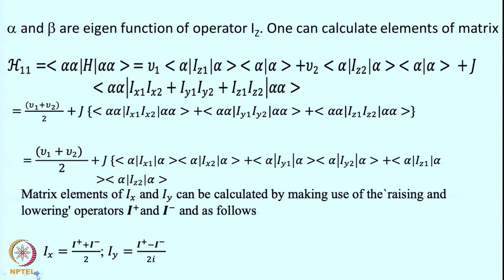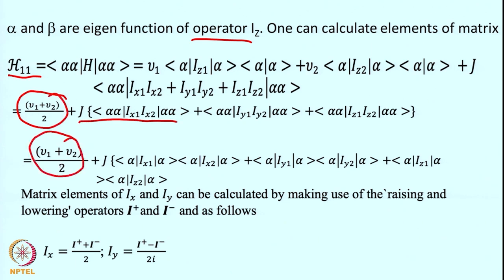We can define the eigenfunction for operator Iz with alpha and beta states, and calculate the matrix elements. From this we get terms H11, and solving the equation gives essentially the frequency terms and the coupling terms. The frequencies of spins 1 and 2 divided by 2 come at the center. We solve using the matrix elements Ix and Iy by making use of the raising and lowering operators, typically used in quantum mechanics.